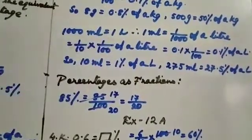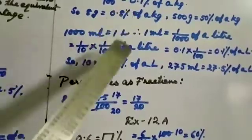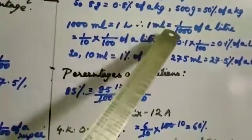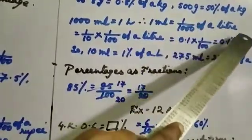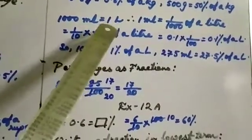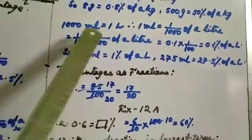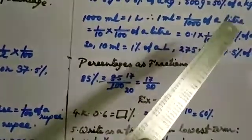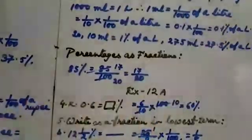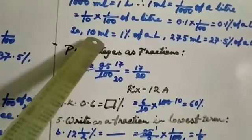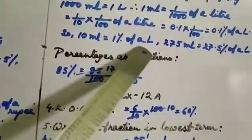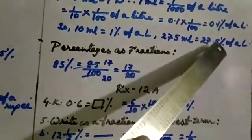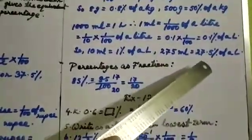Now, 1000 milliliters is equal to 1 liter, so 1 milliliter is equal to 1 by 1000 of a liter — that means 1 by 10 into 1 by 100 of a liter. Converting 1 by 10 to decimal gives 0.1, so 0.1 multiplied by 1 by 100 gives 0.1 percent of a liter. For example, 10 milliliters is equal to 1 percent of a liter. If you follow this process for the other numbers you will get those answers.